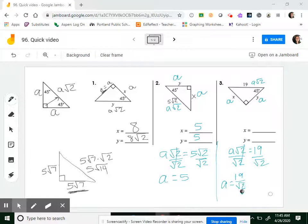19 times the square root of 2 is 19 root 2. The square root of 2 times the square root of 2 is the square root of 4. The square root of 4 is 2. If you want to divide 19 by 2, you could have 9.5 root 2, but I'm going to leave it. So either one of those is good. That's my A value, so that's X and Y.